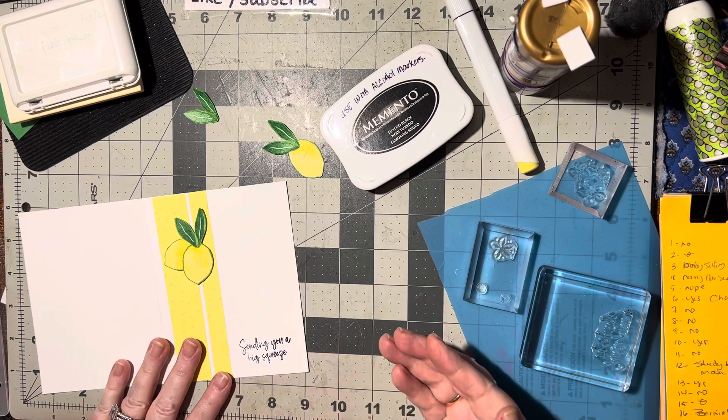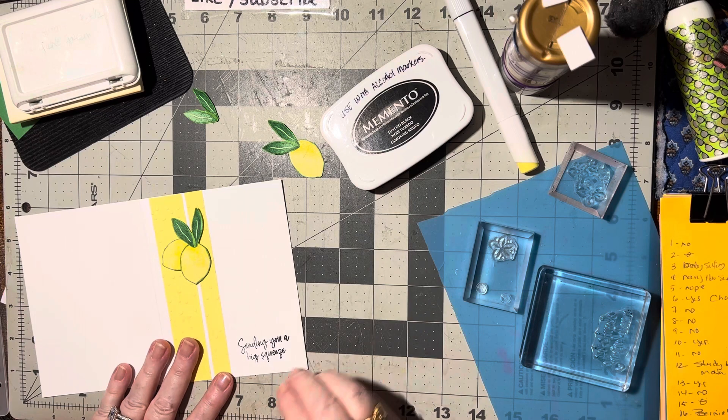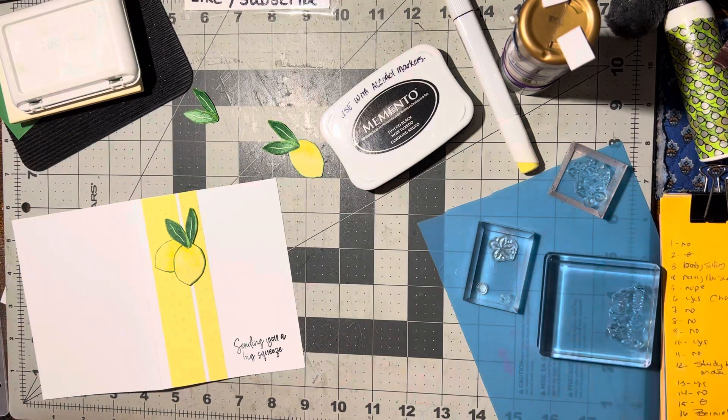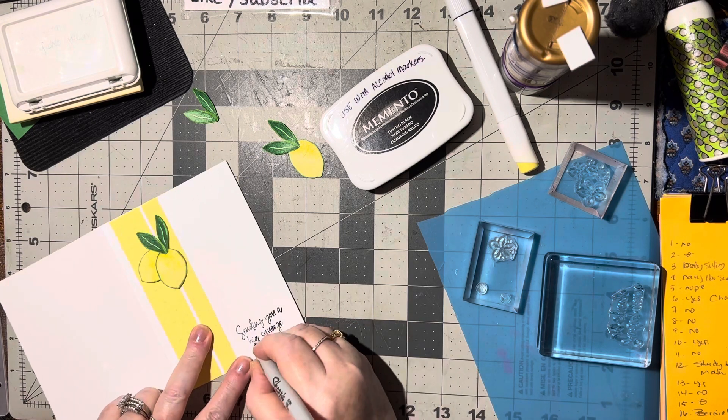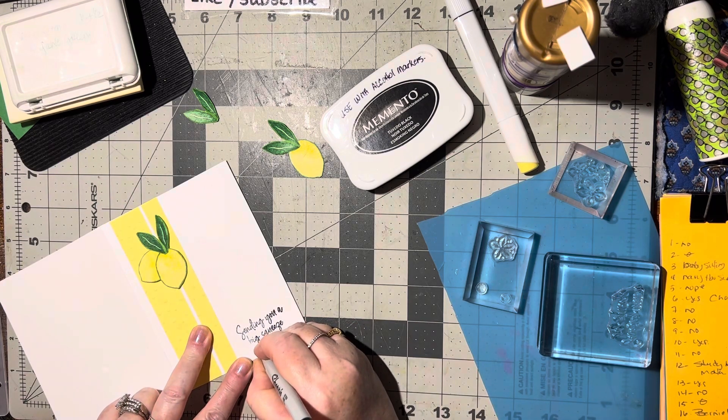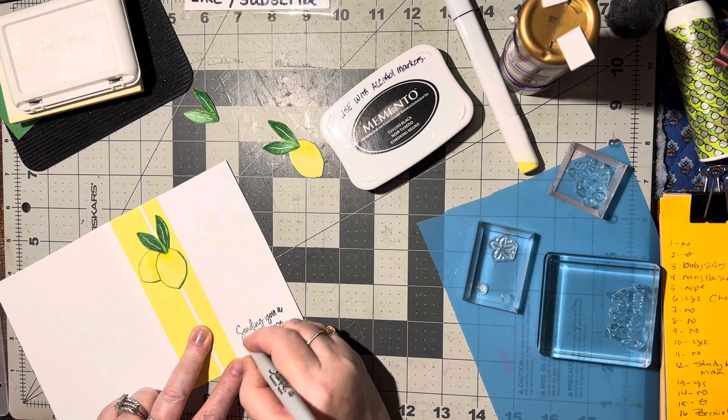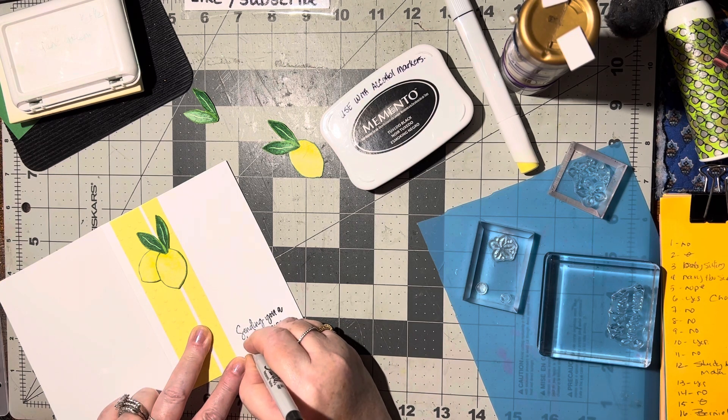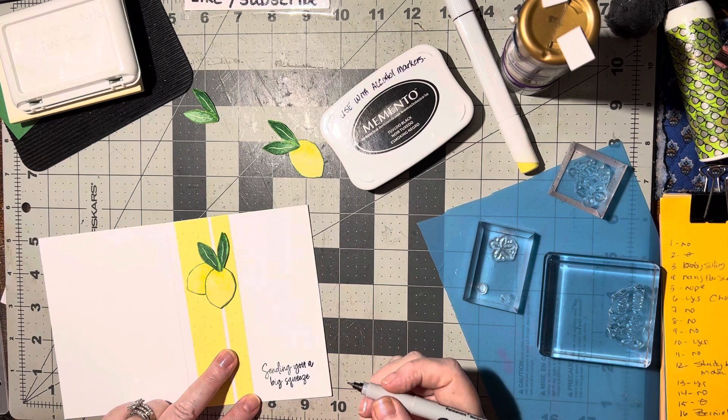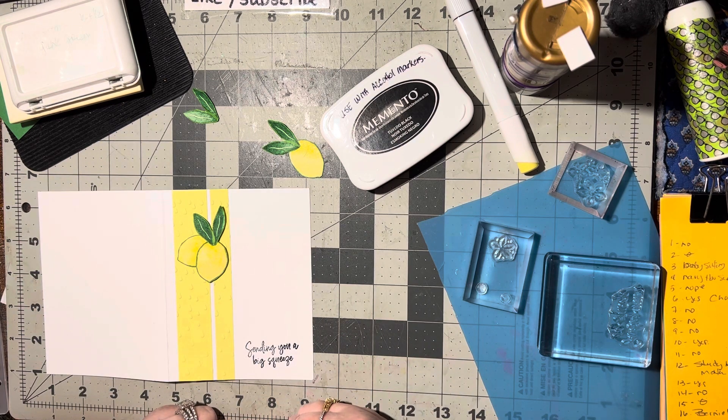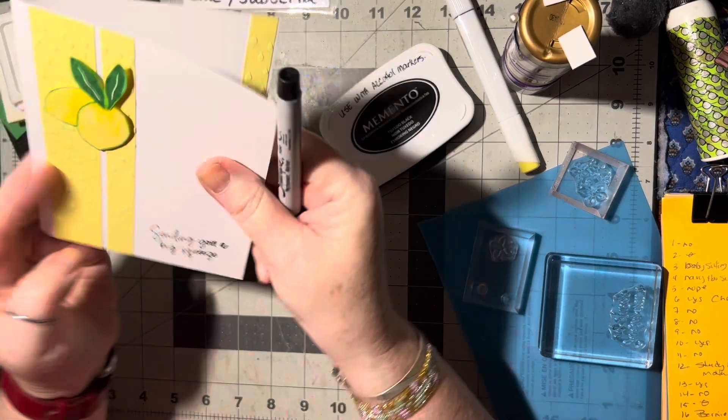I can either stamp it on white and then cover it and 3D it, or I can try to salvage it by doing this. I think I can salvage it because it's just a couple little pieces right there. Okay, that looks better to me. Sometimes you can fix it, sometimes you can't.